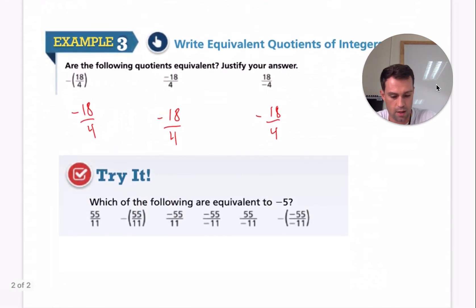All right. Last one. Which of the following are equivalent to negative five? All right. The first one, this would be positive five. So it's not this one. This one would be negative five. So it is this one because we have the negative at the front.